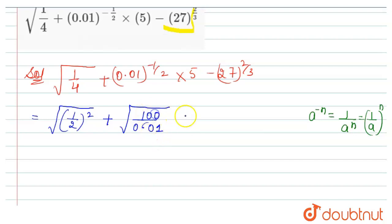So here it is 100 into 5 minus 27 is a cube of 3. So 3 cube raised to power 2 by 3.